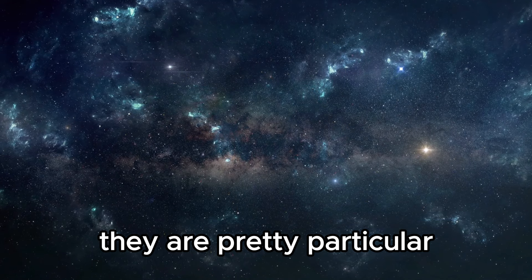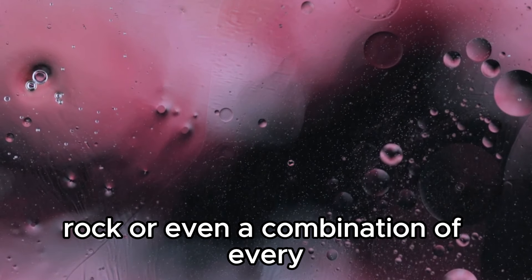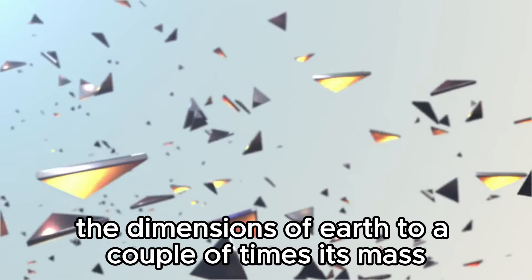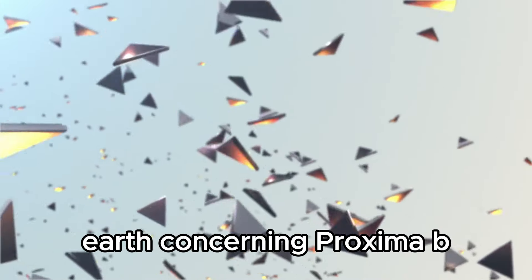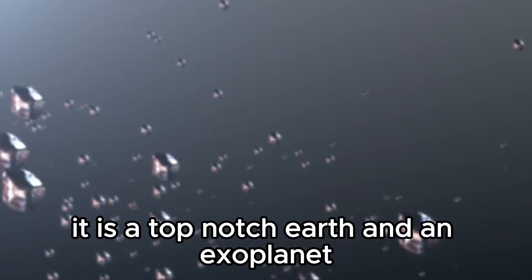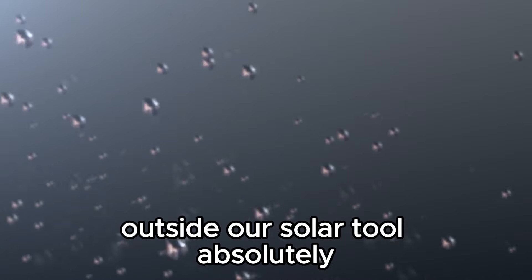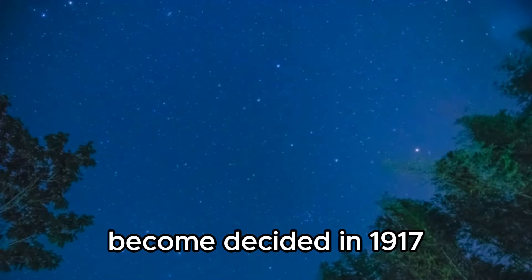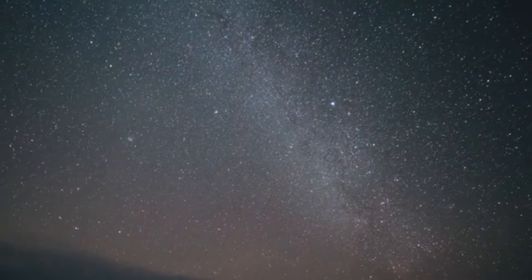They can be fabricated from gas, rock, or a combination of both, and their sizes can range from twice the size of Earth to several times its mass. Concerning Proxima B, it is a super Earth and an exoplanet, implying that it is a planet outside our solar system. The first feasible proof of an exoplanet was discovered in 1917, though it garnered little interest and recognition. However, in 1992 the first confirmed identification happened which left researchers astonished.